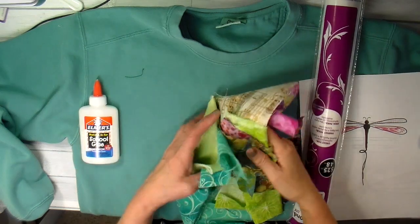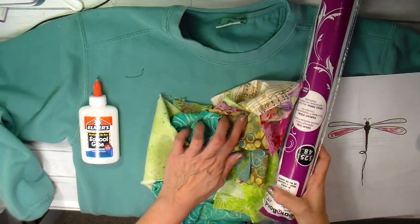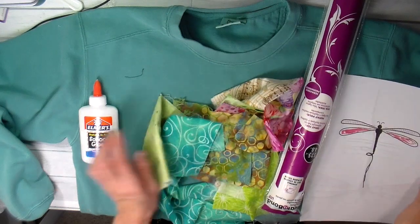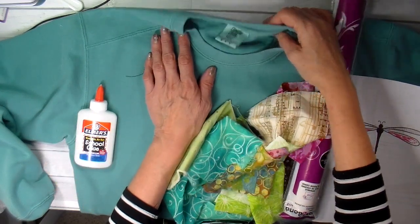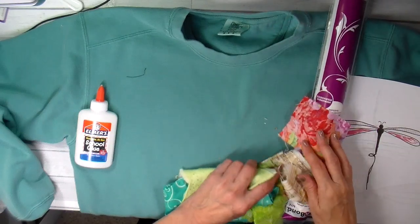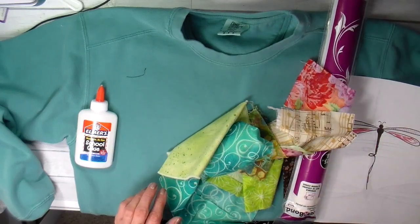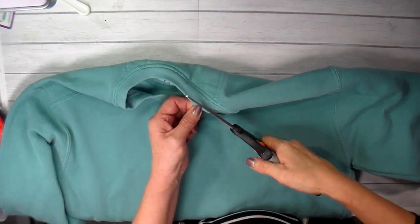I started with several scraps of fabric, my heat and bond light, my dragonfly design, and then some white school glue. I'm using a comfort color sweatshirt. This is one of my favorite sweatshirts. This is the color sea foam.